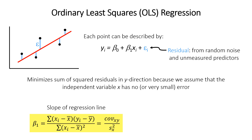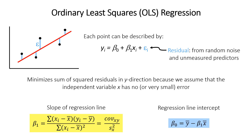The slope of our regression line, β1, is calculated as the covariance of x and y divided by the variance of the independent variable x. You heard about covariance in the video on correlation, so you can refer back to that. All regression lines go through the mean of both variables — this is a defining property — and we can get the intercept once we know the slope using that relationship.